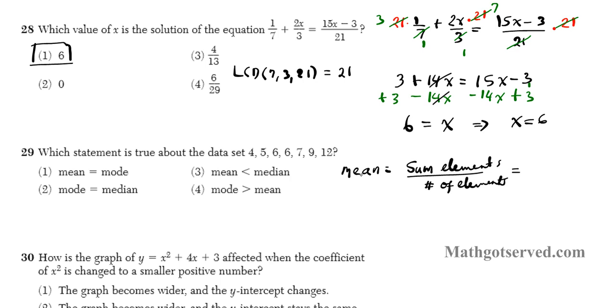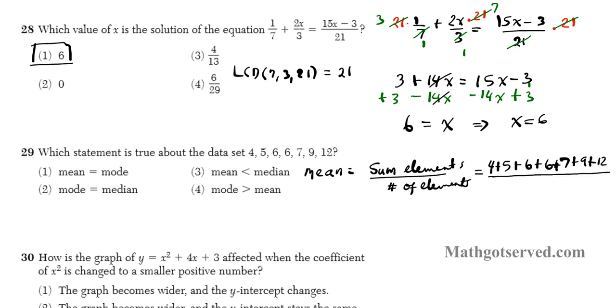So to sum it up, we just add all these elements together. 4 plus 5 plus 6 plus 6, I'm running out of space here, plus 6 plus 7 plus 9 plus 12. This is the sum of all the elements divided by the number of elements. How many elements do we have? 1, 2, 3, 4, 5, 6, 7, so 7. When you add that in your calculator, you get 49 over 7 which equals 7. So there goes your mean. Your mean is 7.